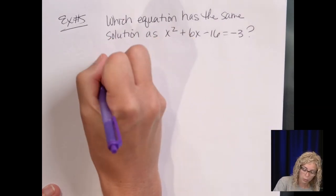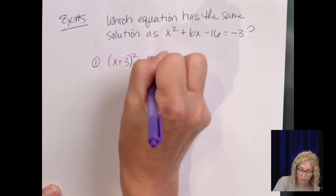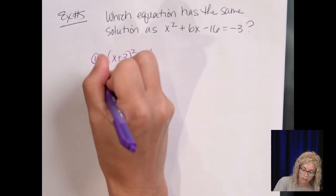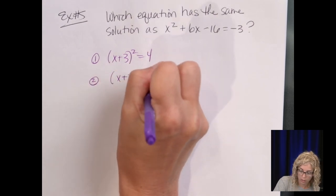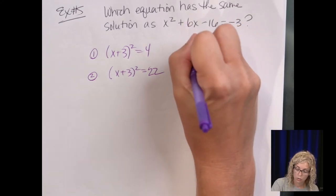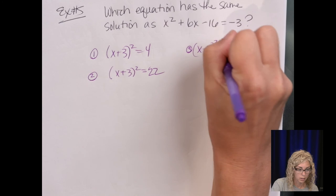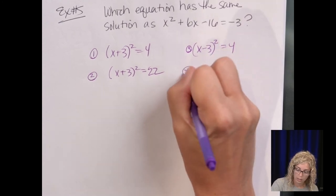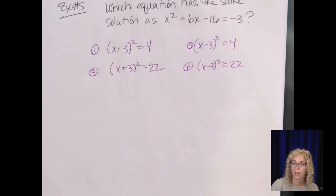Our answer choices are: answer choice 1 is x plus 3 squared equals 4. Number 2 is x plus 3 squared equals 22. Choice 3 is x minus 3 squared equals 4. And then x minus 3 squared equals 22.